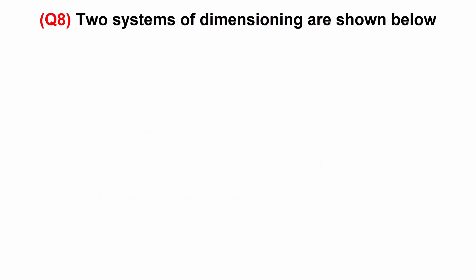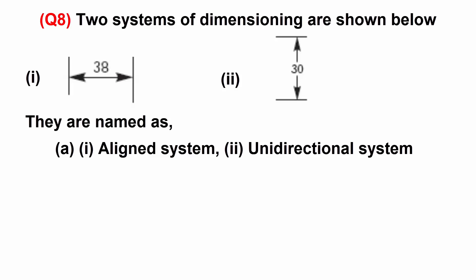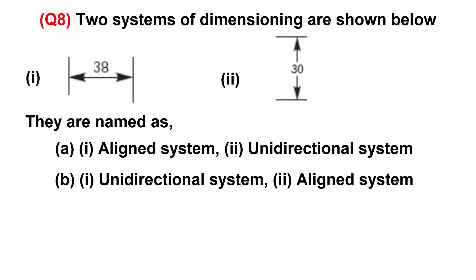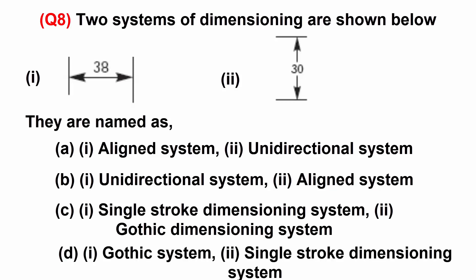Two systems of dimensioning are shown below. They are named as: A: one aligned system, two unidirectional system. B: one unidirectional system, two aligned system. C: one single stroke dimensioning system, two gothic dimensioning system. Or D: one gothic system, two single stroke dimensioning system.